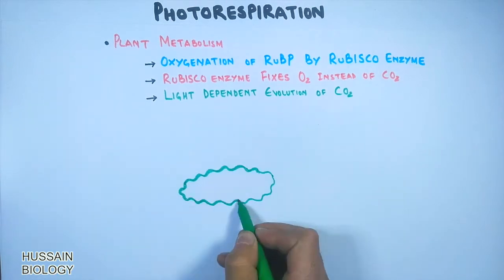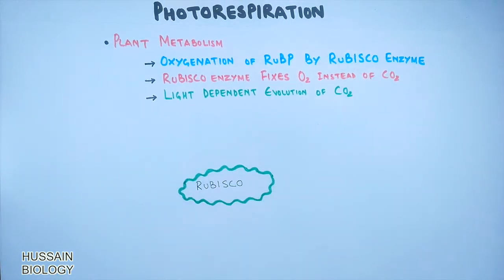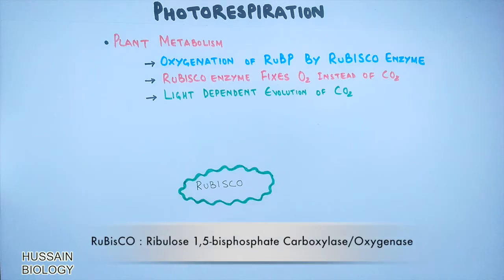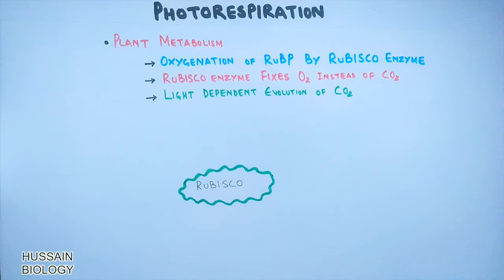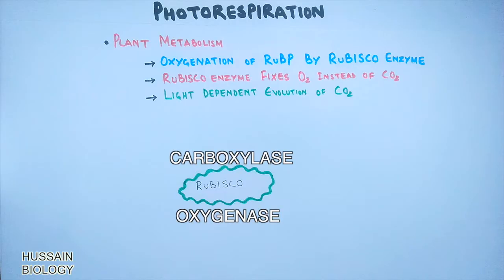Now, the rubisco enzyme is the most abundant enzyme on earth and it is a bifunctional enzyme. Its expanded name is ribulose-1,5-bisphosphate carboxylase/oxygenase. It has two types of enzymatic activities: carboxylase activity, when the substrates are RUBP and CO2, and oxygenase activity, when the substrates are RUBP and oxygen.